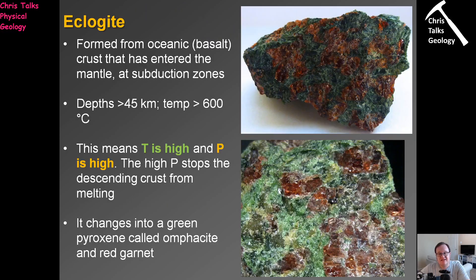Once our oceanic crust makes it into the mantle, the pressure begins to become equal from all directions, which stops the formation of a foliation. Our blueschist will begin to break down, recrystallise, and form a rock called an eclogite. Eclogites typically consist of two minerals: garnet, which is the red mineral, and omphacitic pyroxene — a mineral called omphacite — which is the green mineral. The eclogite is formed when the oceanic crust enters the mantle, at depths typically in excess of 45 kilometres and temperatures in excess of 600 degrees Celsius.